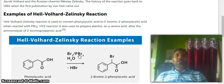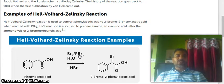Examples of Hell-Volhard-Zelinsky Reaction. Hell-Volhard-Zelinsky Reaction is used to convert phenylacetic acid to 2-bromo-2-phenylacetic acid when reacted with PBr3.